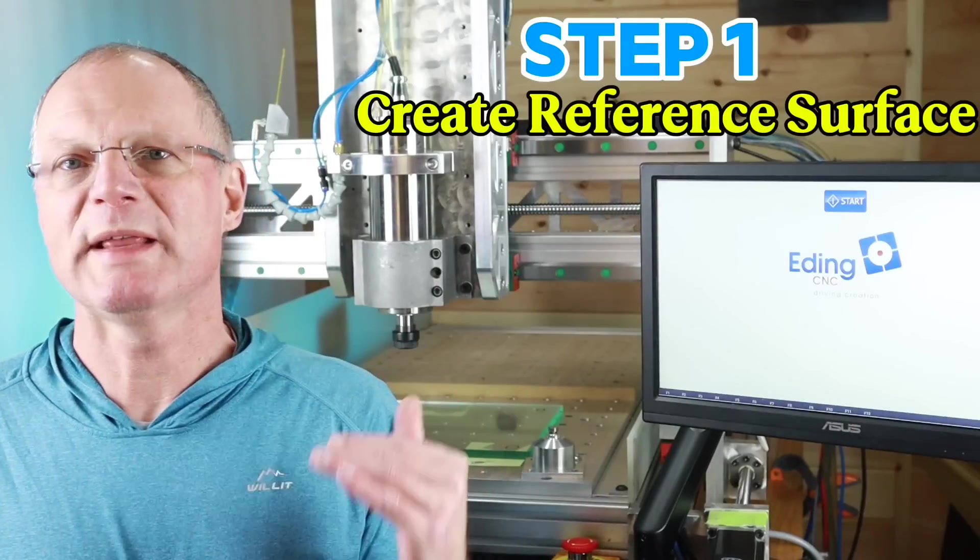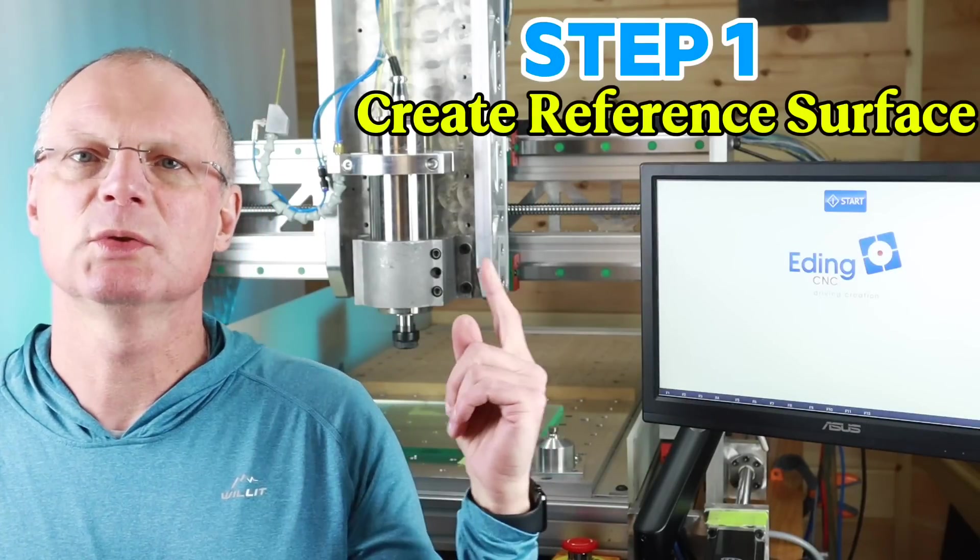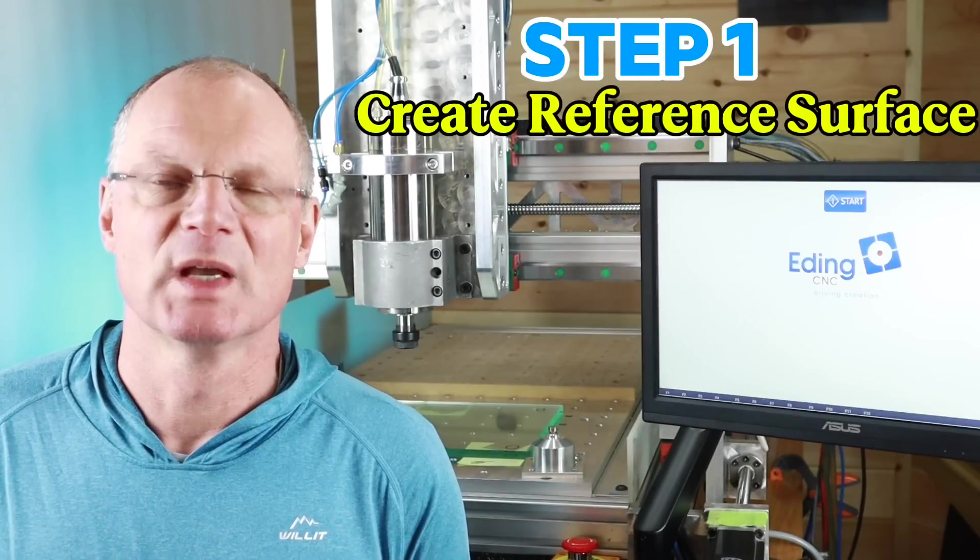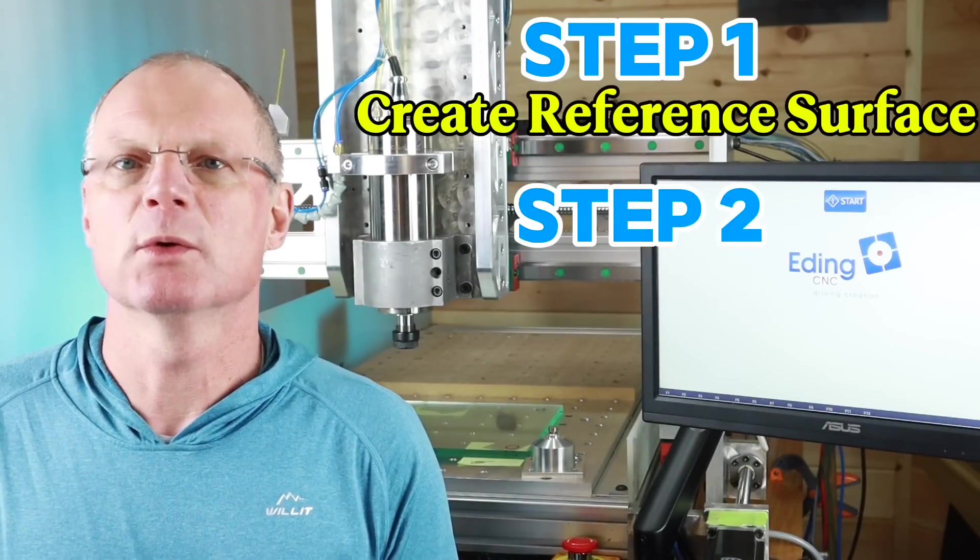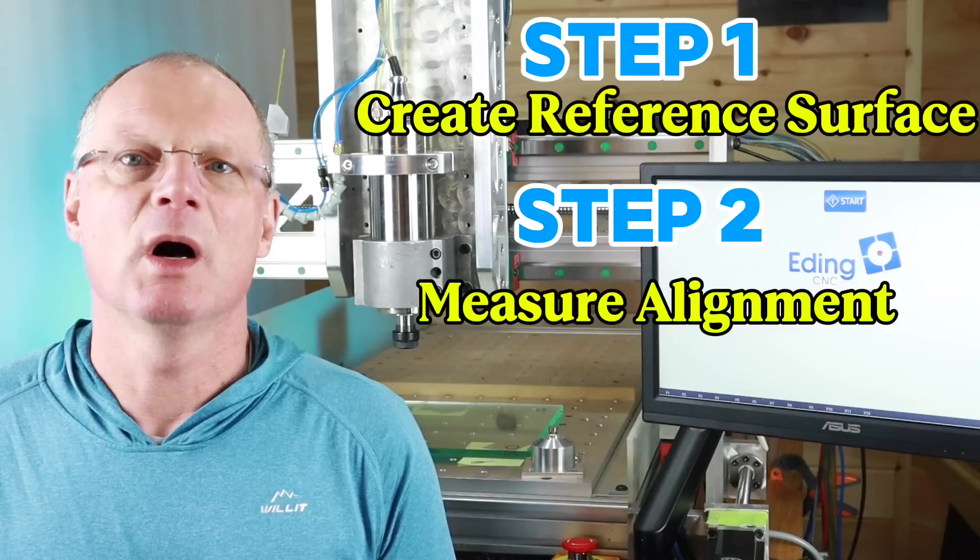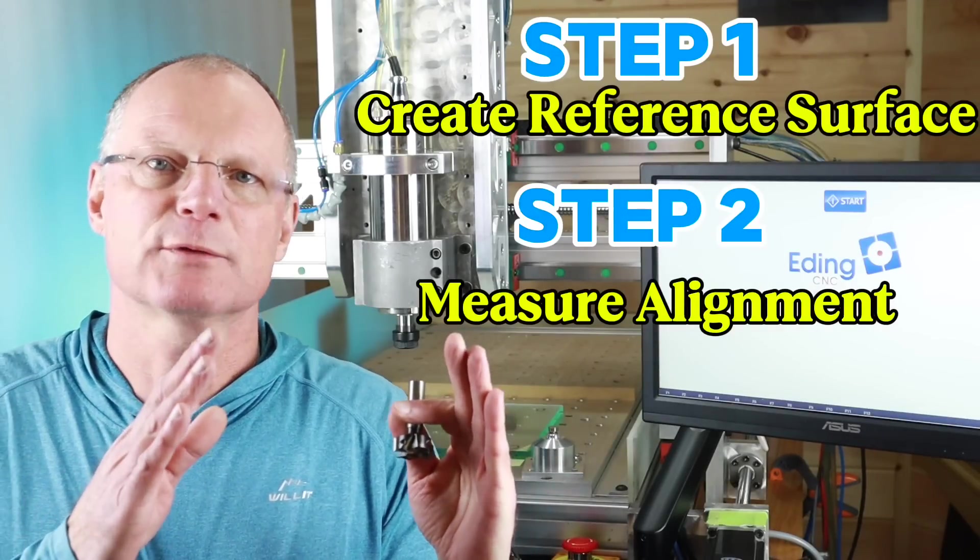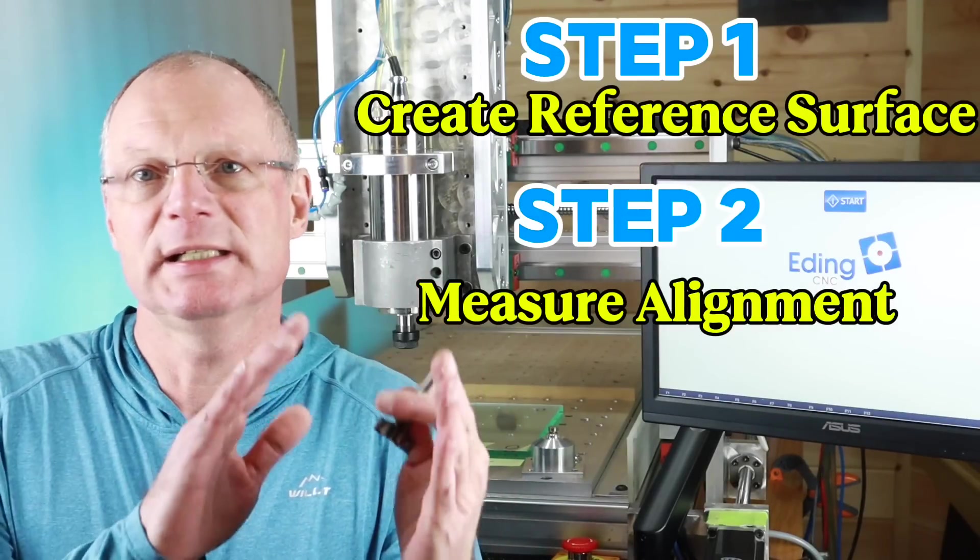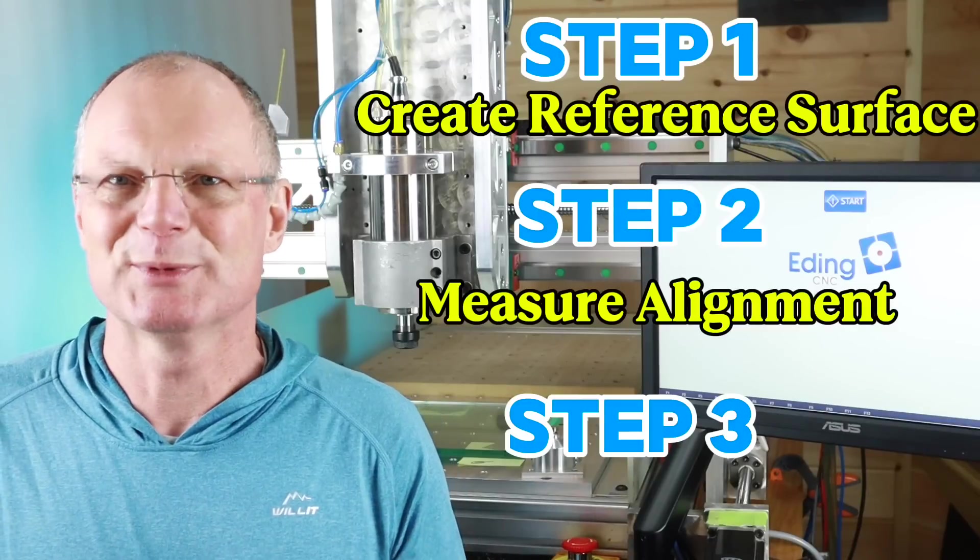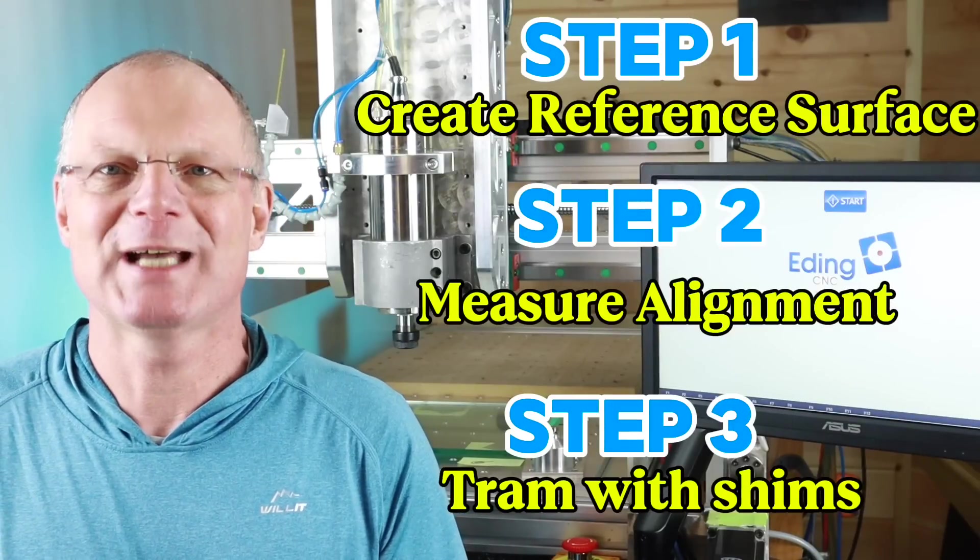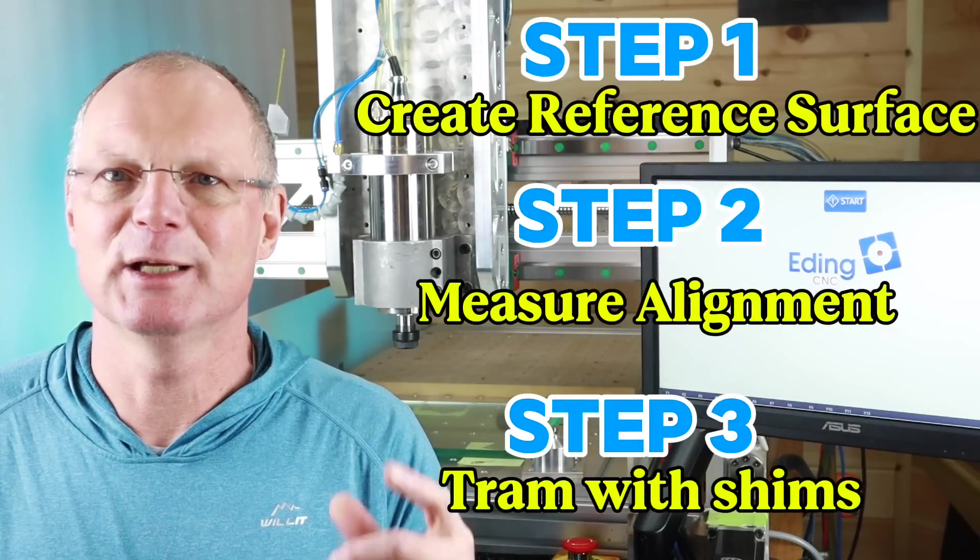So in step one we are going to calibrate that glass plate parallel to the gantry and also parallel to the Y-axis on the machine. In step two we are going to take a measurement of how the spindle sits out of tram in the nod and in the tilt position. Then in step number three of course we add the shims to that, we align it and we tighten everything in place and give it a final measurement.